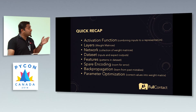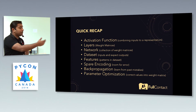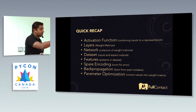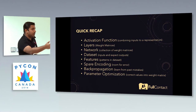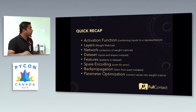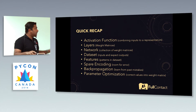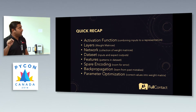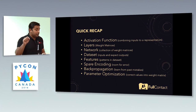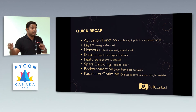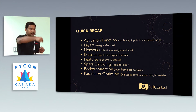Then comes backpropagation — learning from past mistakes. We find the delta between the input and the output and say you have messed up here, please correct it. We send back whatever is the delta. And the last concept is parameter optimization: finding the right and correct value for the weight matrix to predict the input in the right way.